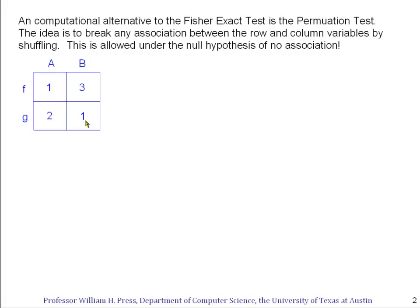The idea is that under the null hypothesis, if a count is in this row, say the F row, then it should be irrelevant which column it's in because there's no association between rows and columns. And similarly, if it's in a particular column, say the B column here, maybe one of these counts in 3, it shouldn't matter which row it occurs in because that also is invariant under the null hypothesis.